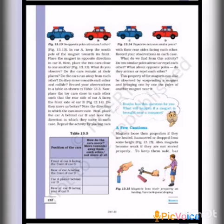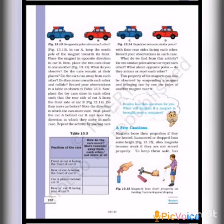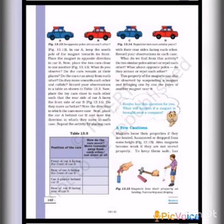This property of magnets can also be observed by suspending a magnet and bringing one by one the poles of another magnet near it. When we bring the same poles together, they repel. Different poles attract. Similar poles repel each other and different poles attract each other. Table 13.3 summarizes this.